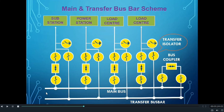In a Main and Transfer Busbar Scheme, the number of isolators used per feeder are 3, and one extra Busbar is used. Both the Busbars are connected to each other by a Bus coupler. The Bus coupler is a combination of a circuit breaker and isolators on either side of the circuit breaker.